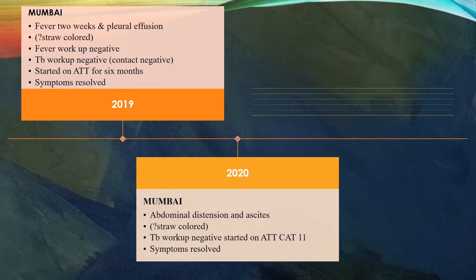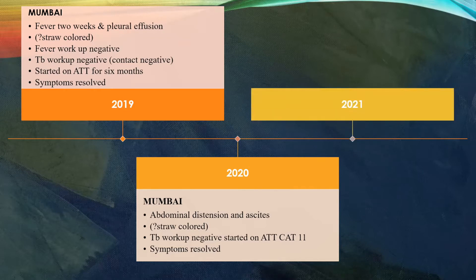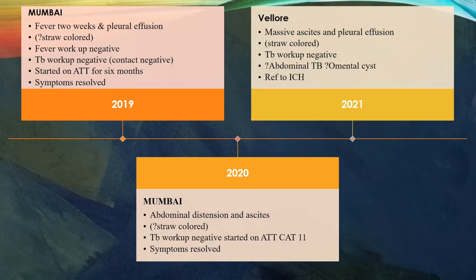She was again admitted in 2021, this time at Vellore, with massive ascites associated with pleural effusion which was again straw colored. TB workup then was negative. She was referred to ICH with suspicion of abdominal TB or omental cyst.